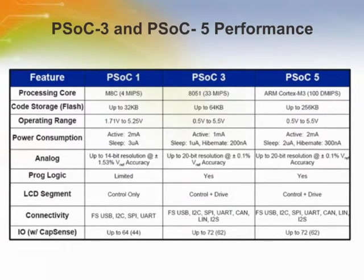This slide compares the performances between PSOC1, PSOC3, and PSOC5. It brings the PSOC design methodology to high-precision analog and high-performance 8, 16, and 32-bit markets. PSOC1 is M8C-based architecture with 4 MIPS and 32 KB of flash memory. PSOC3 is based on the 8051, which has 33 MIPS processing speed with 64 KB of flash memory. PSOC5 is based on the ARM Cortex-M3, and its processing speed is 100 DMIPS with 256 KB of flash memory.